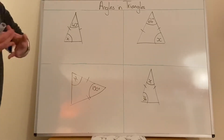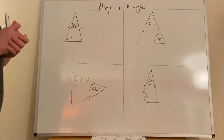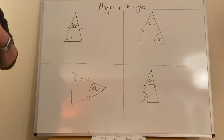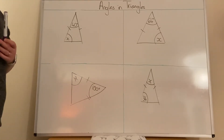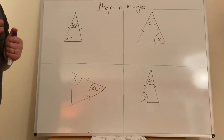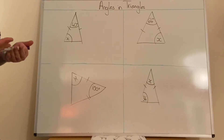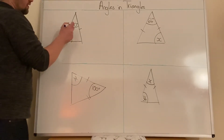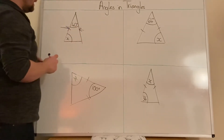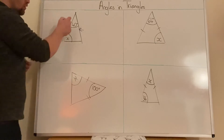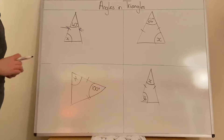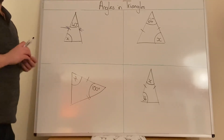Welcome back. For the last couple of lessons we've been looking at angles in triangles and we're going to continue and finish that today. However, I specifically want to look at isosceles triangles. Isosceles triangles are special triangles because two of the angles and therefore two of the sides are the same — there's one different one. On a triangle you'll notice the two tick marks, which means these two lines are the same and therefore these two angles are the same. What they'll ask you to do is work out a missing angle.